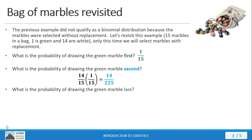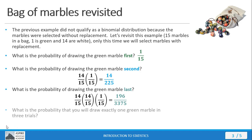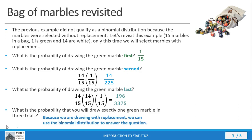The probability of drawing the green marble last also changes. Since we're putting each marble back, the first two probabilities — the probability of selecting a white marble each time — stay the same structure, but the denominators remain 15. The third trial is the probability of getting the green marble. Multiplying all this out, we get 196/3375. Now the probability of drawing exactly one green marble in three trials can actually be solved using the binomial distribution, because we're selecting with replacement.